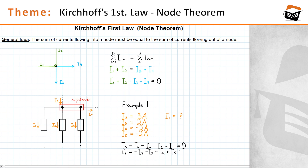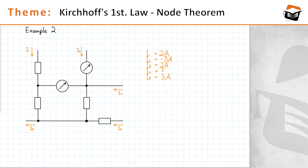Now it's just a matter of plugging the known currents into the variables. We get i1 equals minus 3 amps minus 2 amps plus 2 amps minus 2 amps, which equals minus 5 amps. So minus 5 amps is the magnitude of the current flowing through this resistor. Because the magnitude is negative, that means the direction of current flows against the assumed direction. You don't yet know the real direction of electric current; you just know that i1 flows against the assumed direction.